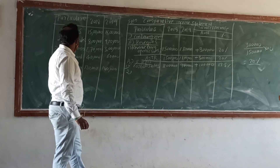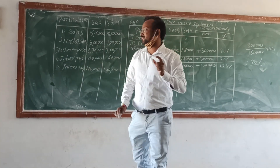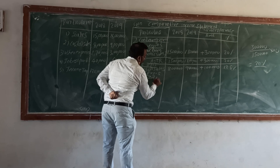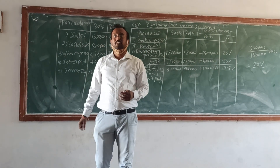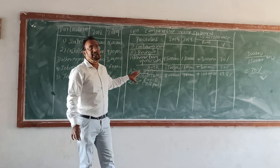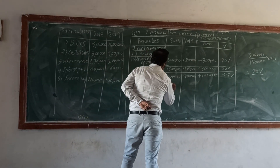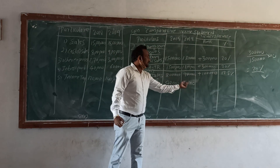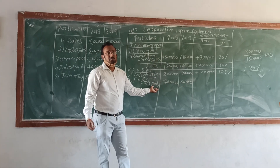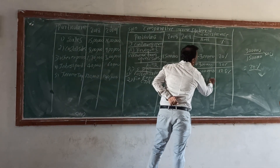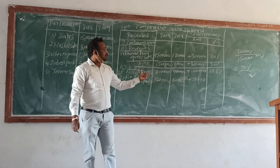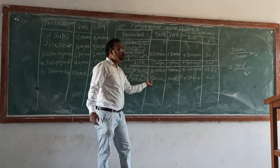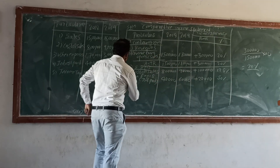Interest paid is also called finance expense. Interest paid for the first year is 40,000 and for the second year is 60,000. The increase is 20,000. The percentage increase is 20,000 divided by 40,000 into 100, which equals 50%.